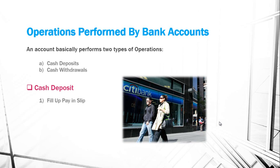The first step is to fill up a pay-in slip. This slip is used to deposit the amount into the bank. The customer receives it from the counter, fills it, and deposits the amount. The second step is the cashier's duty: the cashier collects the amount from the customer, counts it, and compares it with the figure written on the pay-in slip, then records the deposit into the cash book.